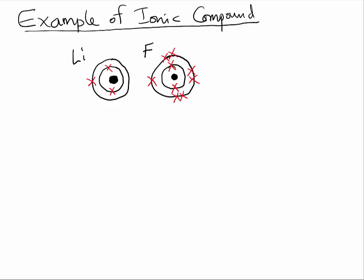Do not forget that main group elements always want to be like the noble gases. How can lithium be like a noble gas? It would have to lose the one electron in its outermost shell to be like helium. How can fluorine be like a noble gas? It would have to gain an electron so that its outermost shell would have eight electrons. So lithium would lose one electron and fluorine would gain that one electron — that is what we call transfer of electrons.